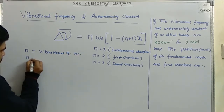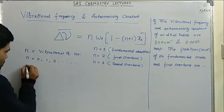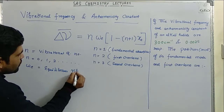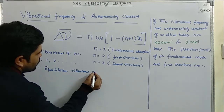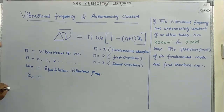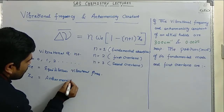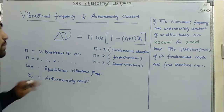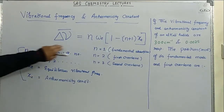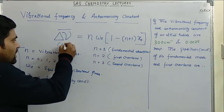Here n is the vibrational quantum number and its value varies from 0, 1, 2, 3, and so on. Omega_e is known as the equilibrium vibrational frequency. The anharmonicity constant is also sometimes asked in the question. These are the variables used in this formula, and delta nu is always given in centimeter inverse.